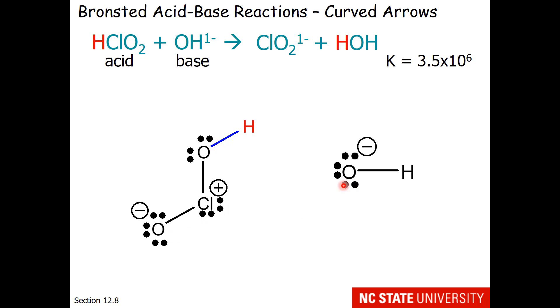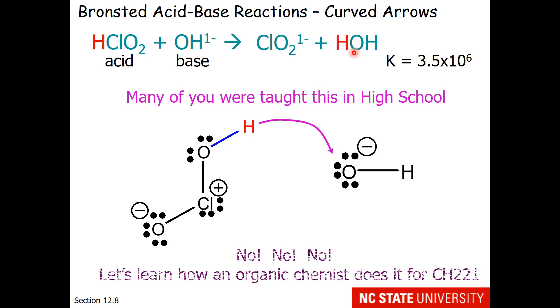Here is the chlorous acid and here is the hydroxide. We know that the proton moves from the chlorous acid to the hydroxide to make water. But how does it get there? Many of you were taught this in high school, that the proton moves from the acid to the base. That is true, but it won't help you for organic chemistry. Organic chemistry thinks about the electrons moving, not the atoms.